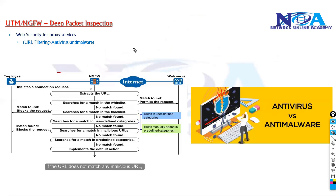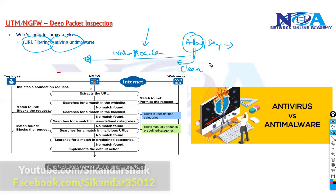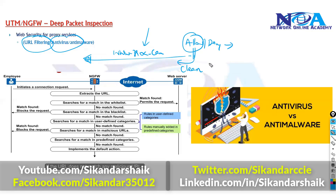The list of websites within these categories is updated automatically. Not only that — even if you allow a specific URL, there is a possibility that the web page may contain malicious code that could infect your computer or network. So beyond just allowing or denying URLs, you also need to make sure that allowed URLs are clean and do not contain any malicious code or malicious URLs.